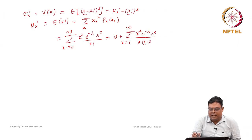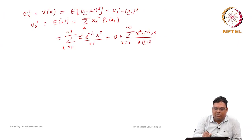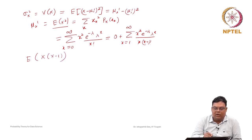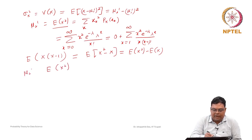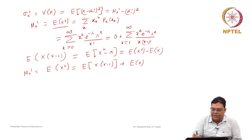We can cancel x minus 1. So instead of finding expected value of x squared directly, we will find expected value of x(x-1) first. The benefit is: E[x(x-1)] = E[x² - x] = E[x²] - E[x]. So we can simplify: E[x²] = μ₂' = E[x(x-1)] + E[x]. Expected value of x we have already computed, which is λ.